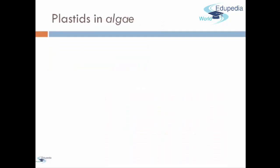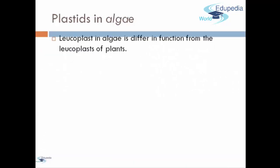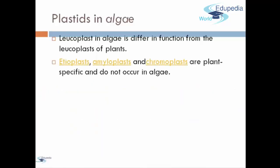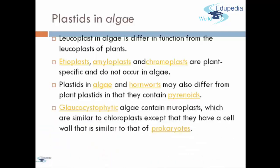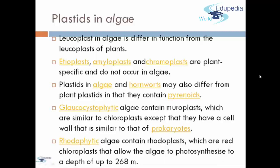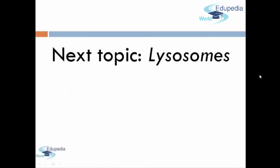Now let's move on to Plastids in algae. Plastids in algae and Leukoplasts in algae are different in function than Leukoplasts in plants. Etioplasts, Amyloplasts, and Chromoplasts are plant-specific and do not occur in algae. Plastids in algae and hornworts may also differ from plants' Plastids in that they contain pyrenoids. Glaucophytic algae contains Muroplasts, which are similar to Chloroplasts except that they have a cell wall similar to that of Prokaryotes. Rhodophytic algae contains Rhodoplasts, which are red chloroplasts that allow the algae to photosynthesize to a depth of up to 268 meters. So Plastids are usually found in plants and algae.